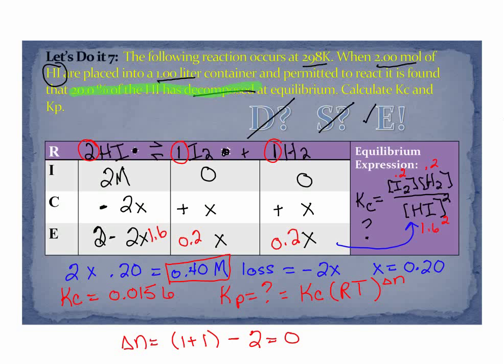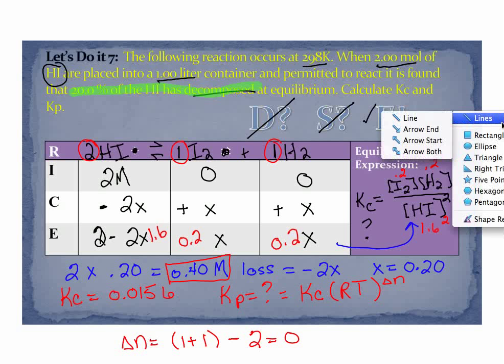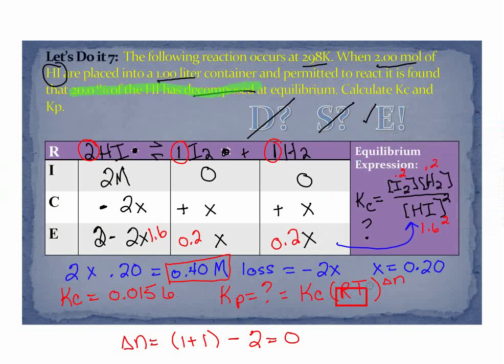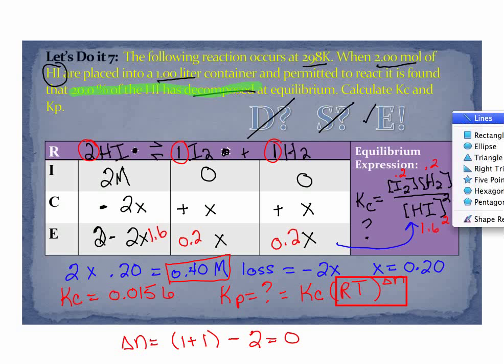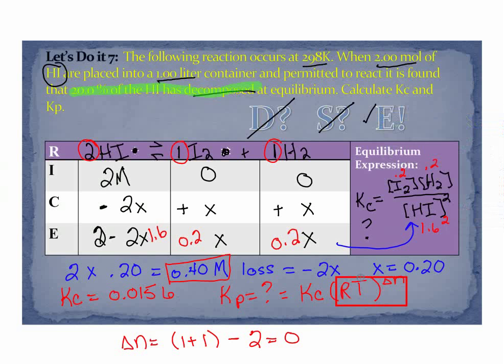So rt to the 0 is equal to 1. And so anything to the 0 power is equal to 1. So that goes away, right? We don't need that. So what that means for us is that our Kp and our Kc are equal to one another. So that means Kp is also equal to 0.0156.